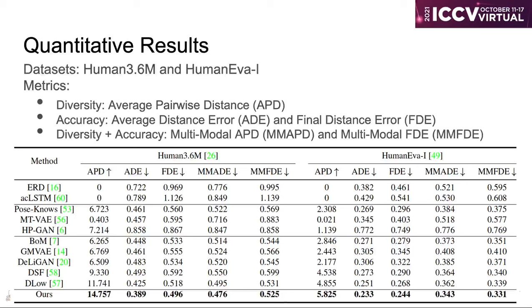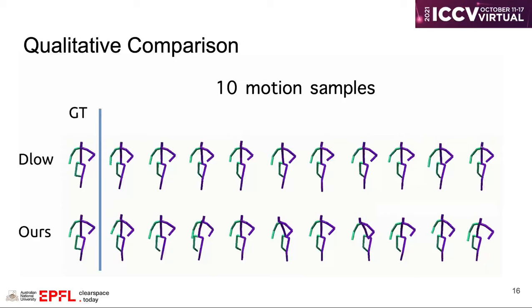and accuracy, which is the average minimum distance to ground truth future motion. Our method outperforms baselines on both diversity and accuracy.